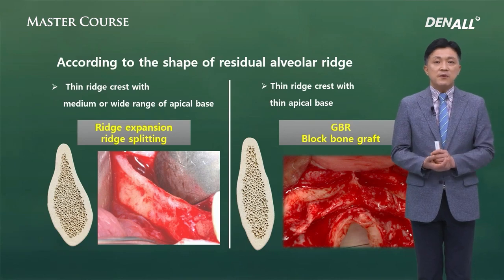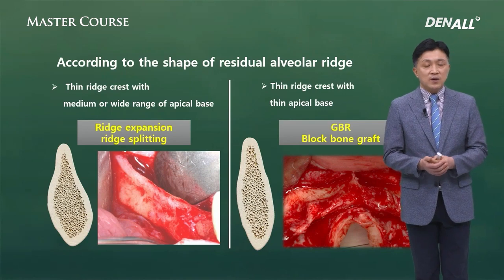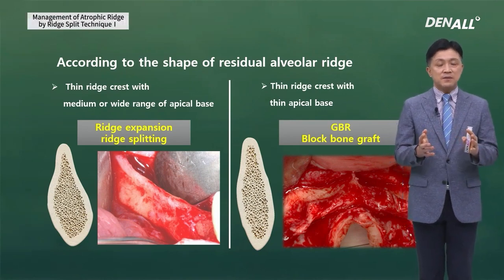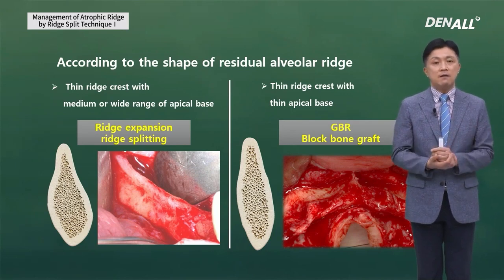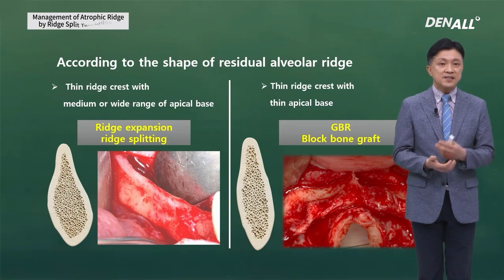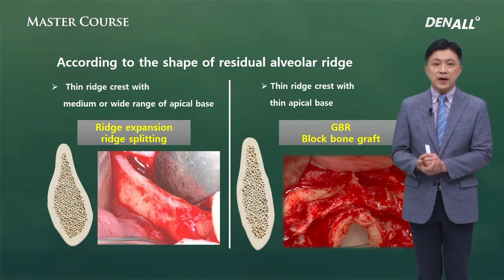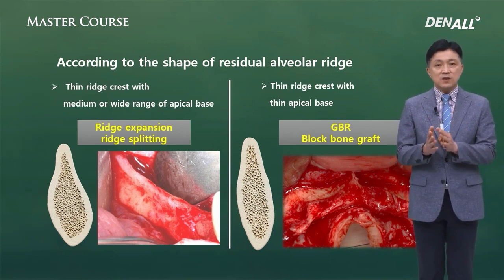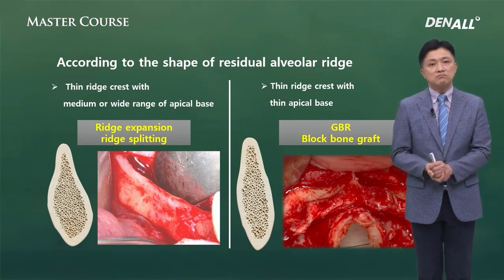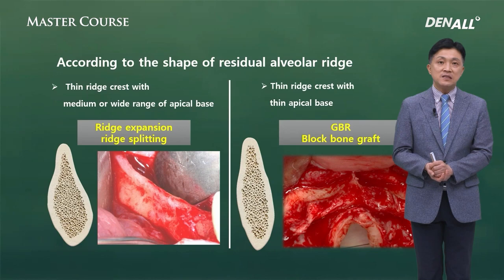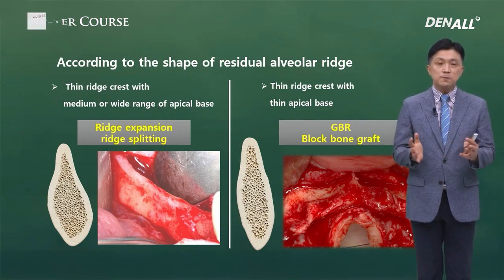Depending on the shape of the residual alveolar ridge, you can assess the indications. The ridge crest can be very thin but have a medium or wide range of apical base — that is the indication for ridge expansion or split. If there is a thin crest with a thin apical base, you should do GBR or block bone graft instead of ridge split to get more bone.